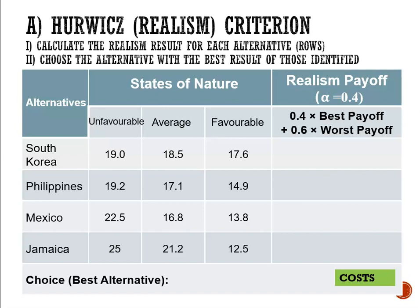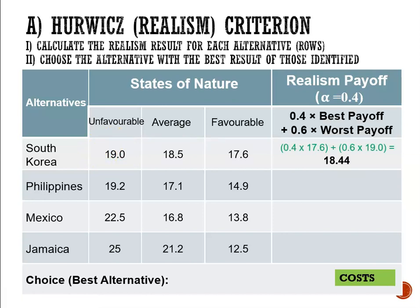The formula is alpha times the best plus 1 minus alpha times the worst. Alpha is 0.4, 1 minus alpha is 0.6. For South Korea, the best outcome would be the lowest cost of 17.6 million. So we have 0.4 multiplied by 17.6 plus 0.6 multiplied by the worst outcome, which is 19. That gives us 18.44.